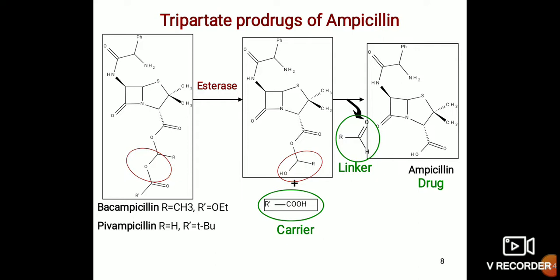R is changed in those compounds — R and R' — with the help of esterase, converted into two parts: the linker and the carrier. Then another linker joins, and it is converted into the active drug, that is ampicillin.